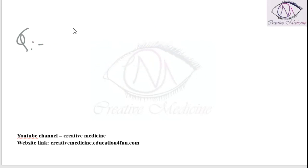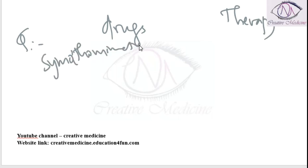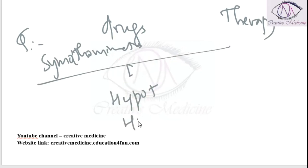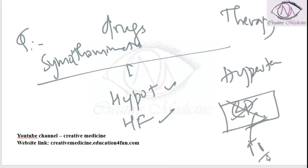Sympathomimetic drugs are useful in therapy of all of the following conditions except: sympathomimetic drugs are used in hypotension, in acute decompensated heart failure we can use them, and also in hypertension. However, in erectile dysfunction you will not use sympathomimetic drugs because they will aggravate the condition. So, sympathomimetic drugs are contraindicated in erectile dysfunction.